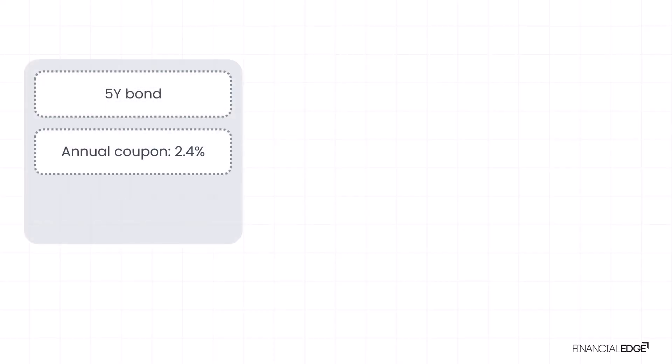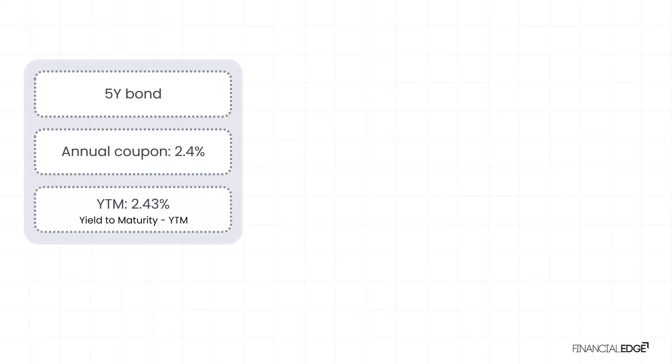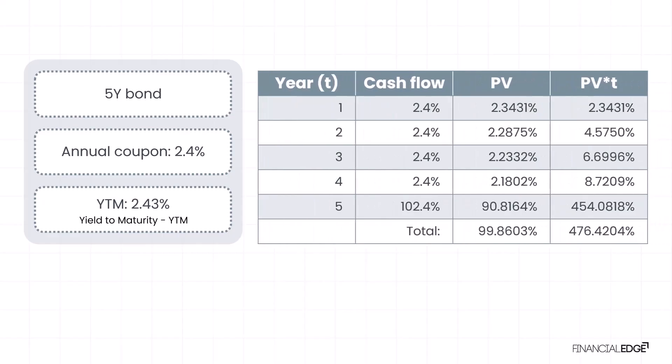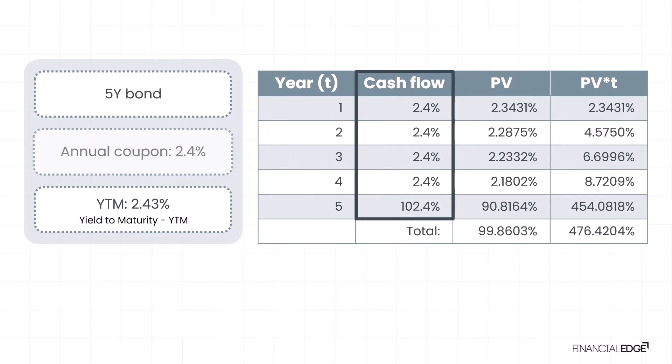Let's take a look at a practical example to calculate Macaulay duration using the bond details provided on screen. We're looking at a five-year bond with an annual coupon rate of 2.4 percent and a yield to maturity (YTM) of 2.43 percent. Let's look at the calculation process step by step. First, we consider the cash flows. The bond pays an annual coupon of 2.4 percent of the face value every year for five years.